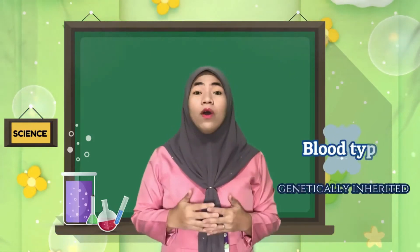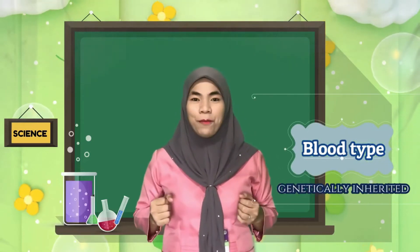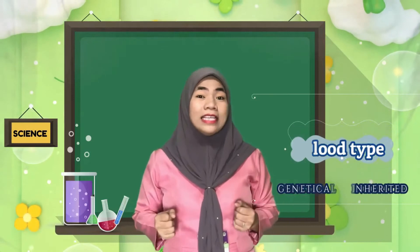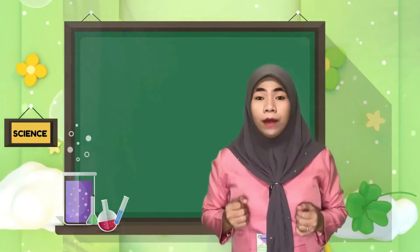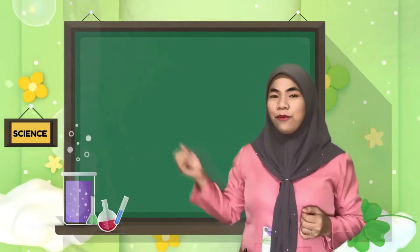There are a lot of phenotypes that are easy to tell: your height, your hair texture, your eye color, whether you have a cleft chin or not. But one phenotype you can tell just by looking is your blood type. Our blood type is also genetically inherited from our parents. Our blood type is a multiple allelic trait. How important is it to determine the right blood type of a person? Let's take a look at this video.